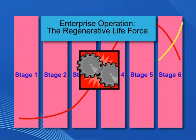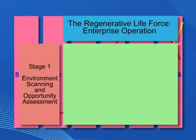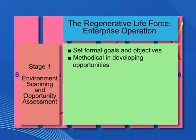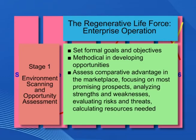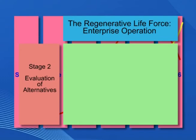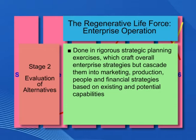At the environmental scanning stage, the enterprise sets formal goals and objectives and becomes more methodical in developing opportunities. Enterprise operators assess the organization's competitive advantage in the marketplace, focusing on the most promising prospects, analyzing its strengths and weaknesses, evaluating the risks and threats, and calculating how much resources it needs to exploit opportunities. Evaluation of alternatives is done in rigorous strategic planning exercises, which craft the overall enterprise strategies, but cascade them into marketing, production, people, and financial strategies based on existing and potential capabilities. Investment criteria are used.